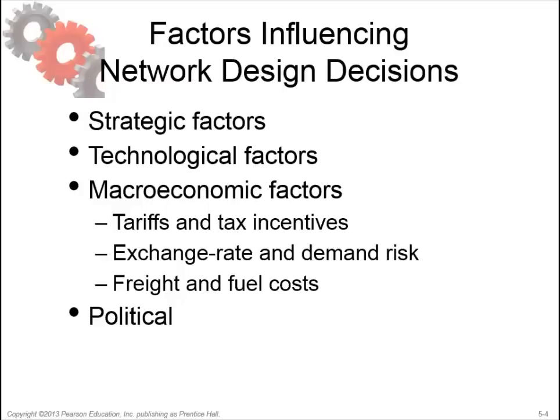The second factor is technological factors. Characteristics of available production technologies have a significant impact on supply chain design decisions. If production technology displays significant economies of scale, a few high-capacity locations are more effective. This is the case in the manufacture of computer chips, for which factories require a large investment and the output is relatively inexpensive to transport. As a result, most semiconductor companies maintain a few high-capacity facilities.